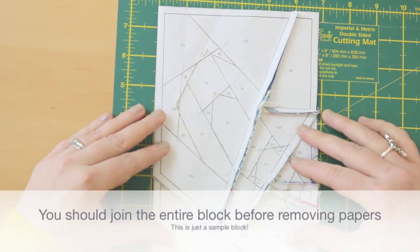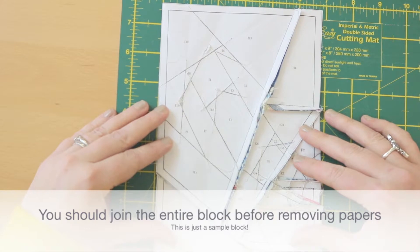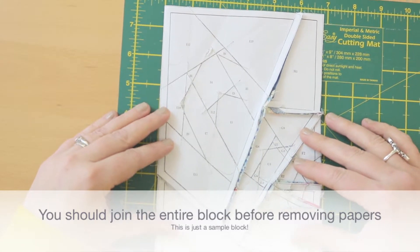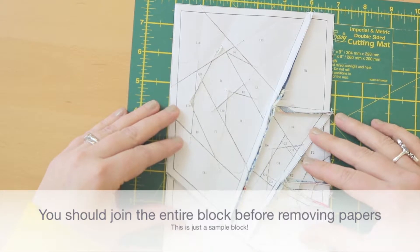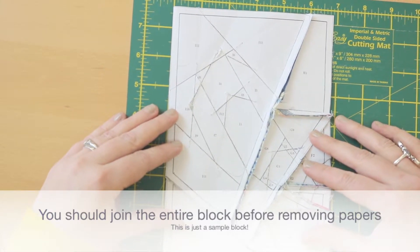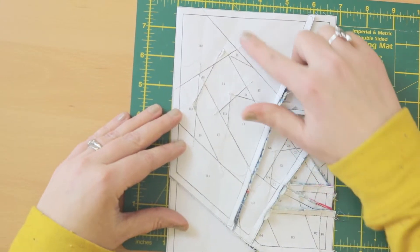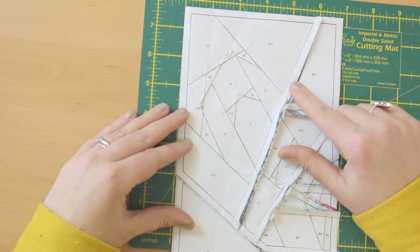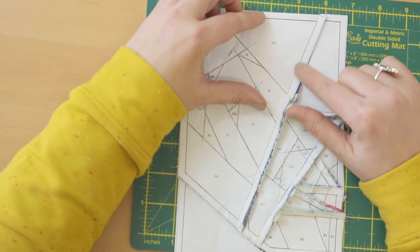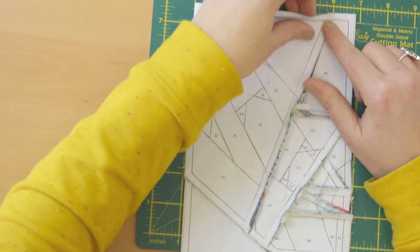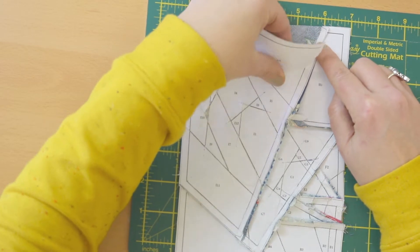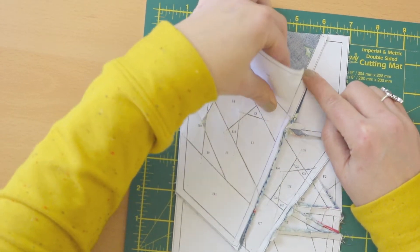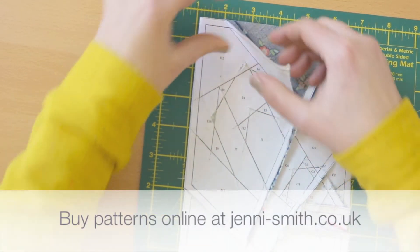At the end when all your block is pieced together, the final job is to remove the papers. You start possibly on an edge with a bigger piece, and where it's perforated by the stitches, you simply start to ease that back and it should come away without much of a problem.